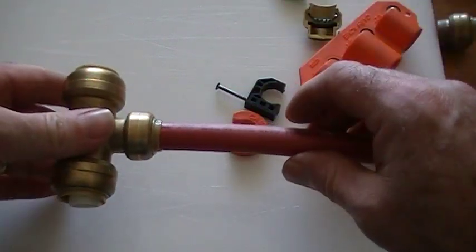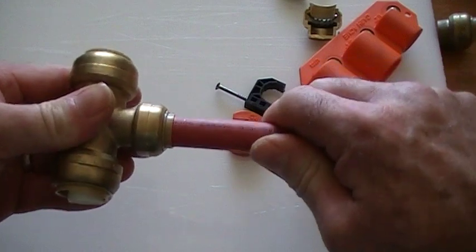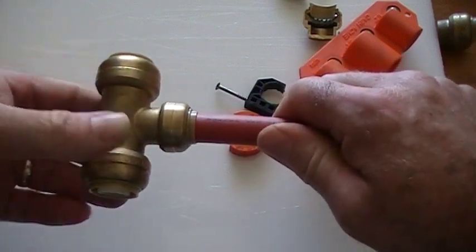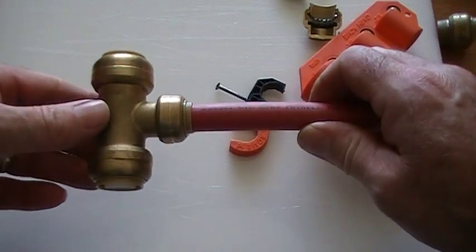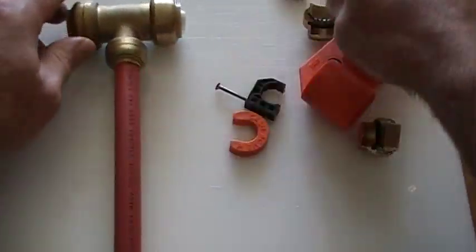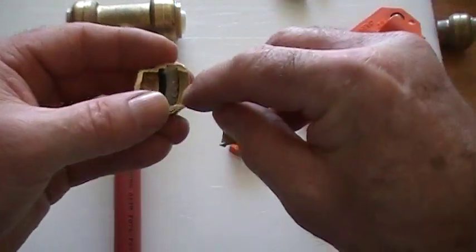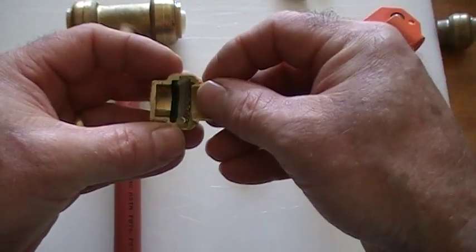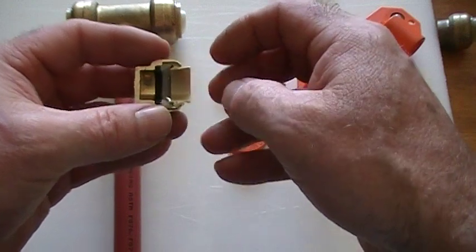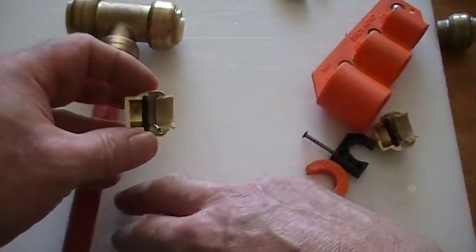So it's that simple. There is no tightening of the fittings. They just simply slide in and that's it. Years ago they had fittings called acorn fittings, and they were very similar to these with teeth very similar to this. But they weren't constructed nearly as well as the SharkBite fittings are.